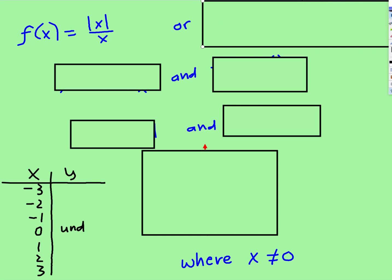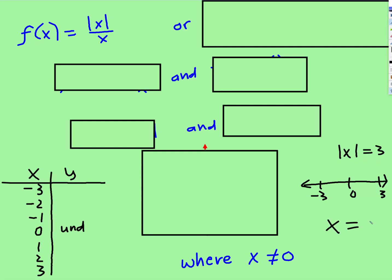Remember when we have just the regular absolute value problems: if we have the absolute value of x equal to 3, that's 3 spaces away from 0. Absolute value means distance from 0. And negative 3 is also 3 spaces away from 0, so x equals 3 and x equals negative 3 — there are two separate things going on.